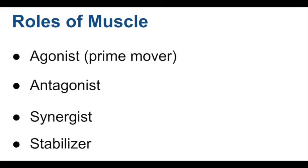The final concept we'll cover in this video is the different roles that muscles can play during movement. The four different roles are agonist or prime mover, antagonist, synergist, and stabilizer. Note that all muscles can perform all the roles — it just depends on the exercise. Sometimes a muscle may be the agonist; other times it's functioning as a stabilizer.